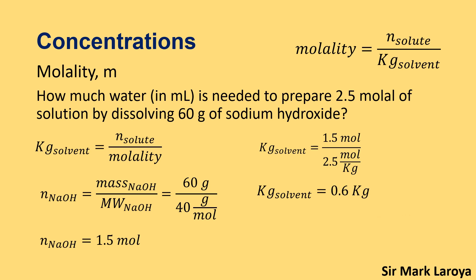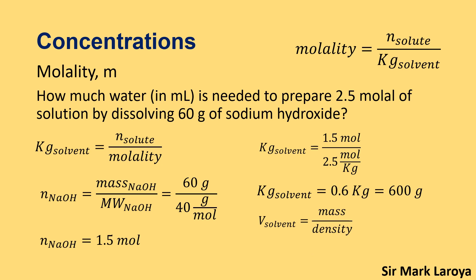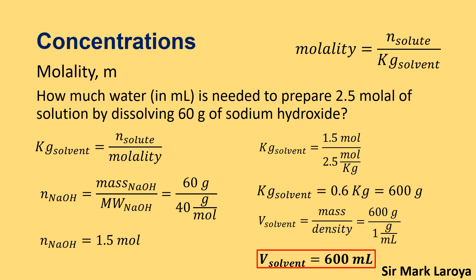0.6 kilograms is equal to 600 grams. We now have the mass of our solvent — our water — in grams. To solve for the volume of our solvent, we divide the mass by its density: 600 grams divided by 1 gram per ml. The unit of grams cancels out, leaving us with ml. The volume of our solvent is 600 ml, and that is the amount of water needed to dissolve 60 grams of sodium hydroxide to produce a solution with a concentration of 2.5 molal.